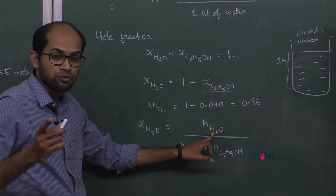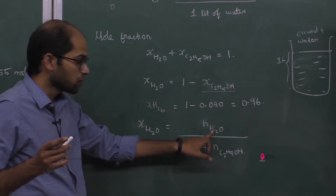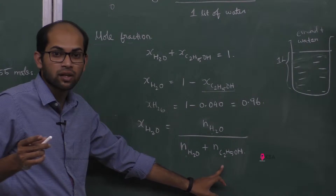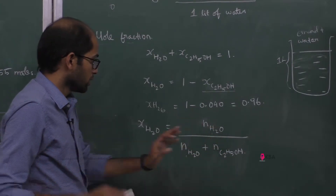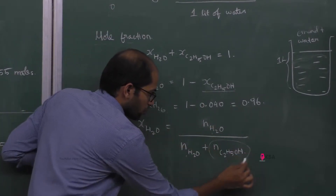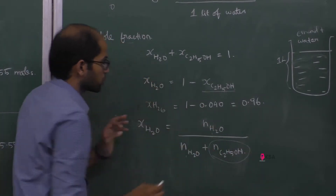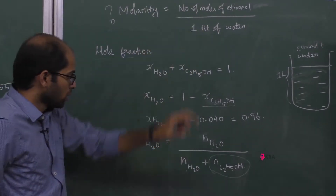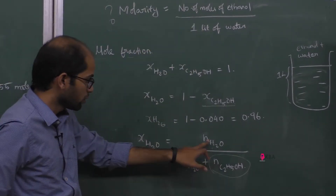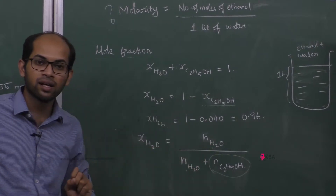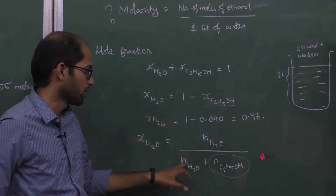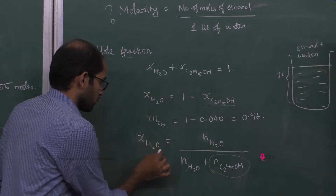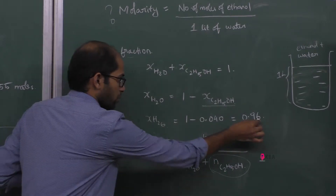The mole fraction formula gives: number of moles of water divided by (number of moles of water plus number of moles of ethanol) equals 0.96.